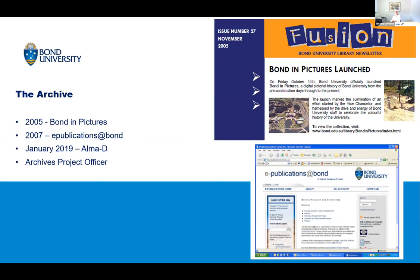Over the years, only a few new images were added and they were done on an ad hoc basis when they were needed. In 2019, the library transitioned from e-publications to Alma D, and Bond archive items on e-publications were uploaded to Alma D, and a new Bond University history collection page was added to the Primo VE collections. From April 2019, the library has had an archives project officer, which has resulted in the sorting and storage of items to an archival standard, as well as items being collated and added to inventories and then digitised to Alma D.